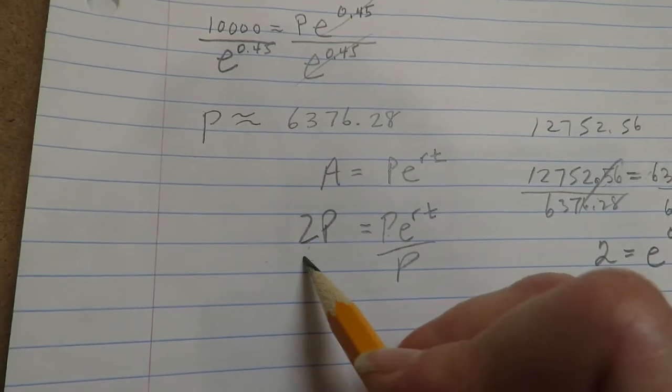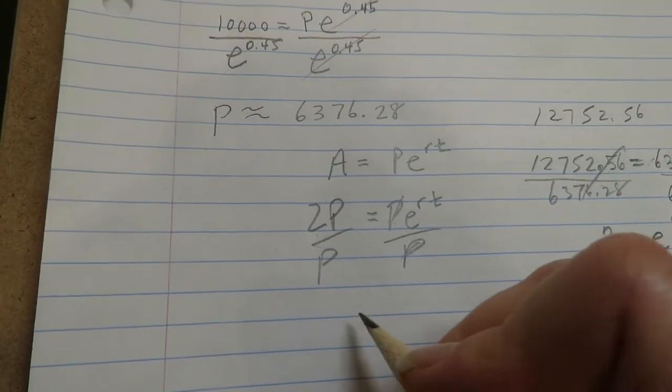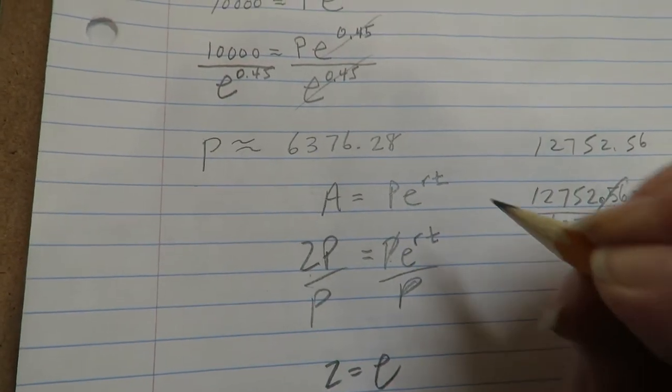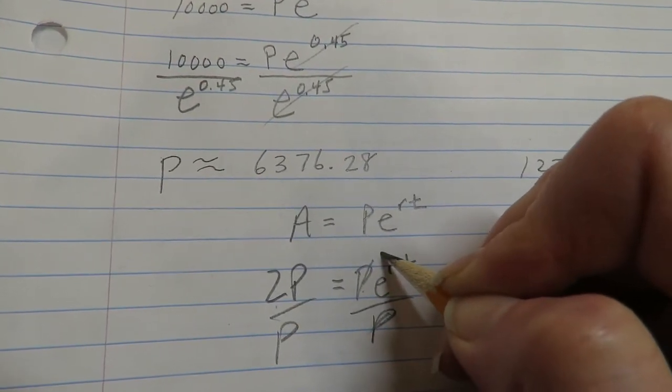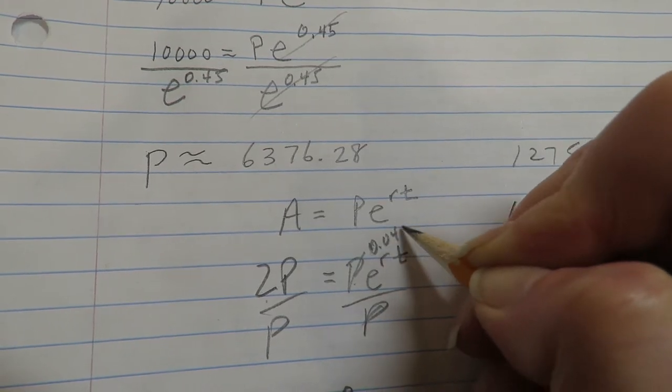Right, and you'll notice in the general algebraic way, if you divide off P, you're going to get the same thing. Oh, I didn't put in the value of 0.045 here for r.